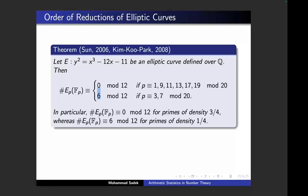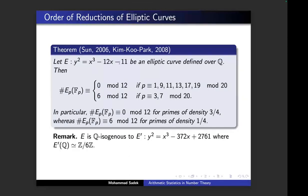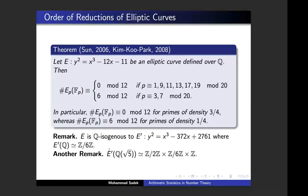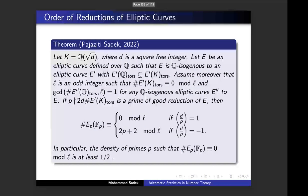That was the only example in the literature. In essence, the order of the reduction is divisible by 12 for primes of density 3/4, and congruent to 6 mod 12 for the remaining primes of density 1/4. What we did is look at this example: it turns out this elliptic curve is isogenous to an elliptic curve with torsion 6, which explains the factor of 6 dividing 12. But it doesn't explain why we have 12 instead of 6.